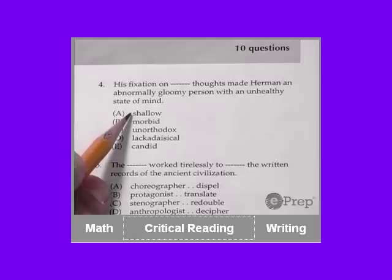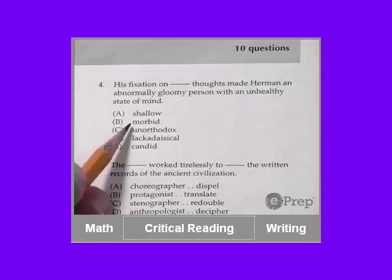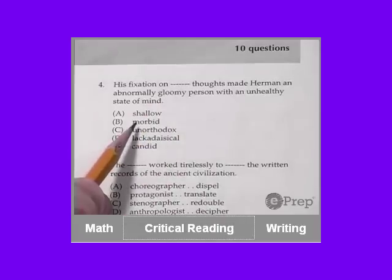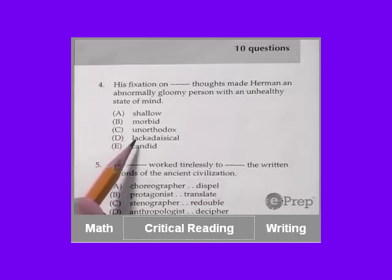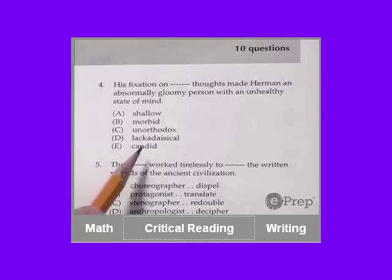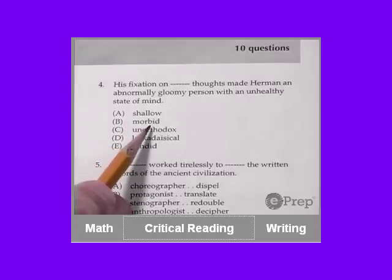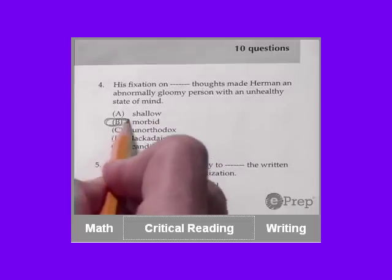The word shallow means not profound or superficial. The word morbid means unwholesomely gloomy. So this one already sounds great to me. See the word gloomy there. I know that this word means unwholesomely gloomy. I already like B a lot, but let's quickly go through the rest. Unorthodox means breaking with convention or tradition. Lackadaisical means lazy or listless. And candid means frank, sincere, or honest. If you have a strong vocabulary and you know that morbid means unwholesomely gloomy, you just pick B and you move on.